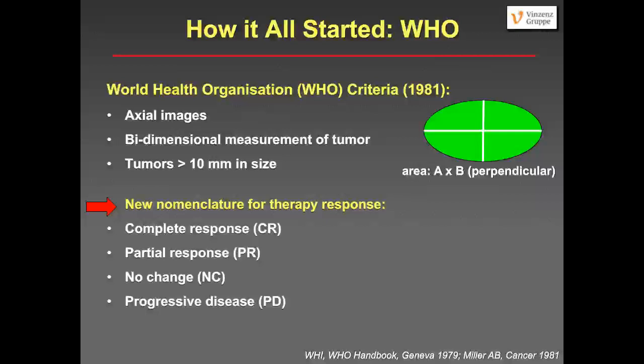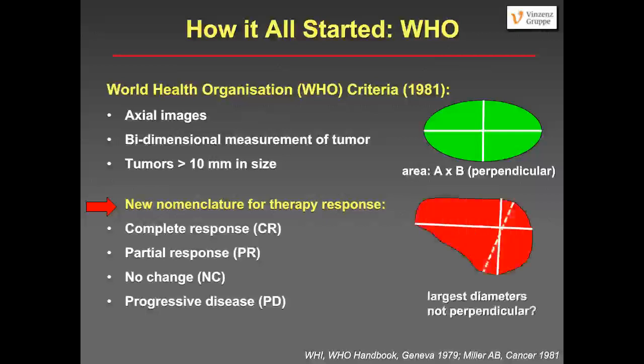Quite soon, people realized there are also downsides with the system, because not all lesions can actually be measured. Think about non-measurable disease like peritoneal carcinomatosis, some pancreatic cancers, and quite irregular tumors. Also, what if the largest diameters of the tumor are not perpendicular? Then you come up with the wrong area. So there are some downsides.